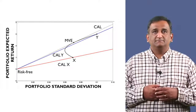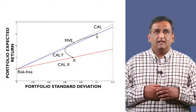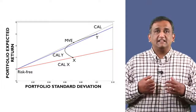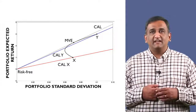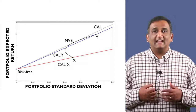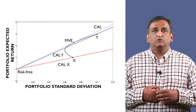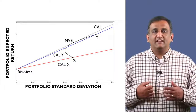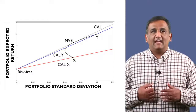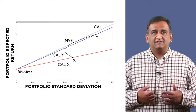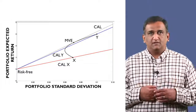Can we do even better than this? Yes — make the capital allocation line from the risk-free asset steeper until it is tangential to the mean variance frontier between X and Y. This is the gray line from the risk-free asset through the point MVE, which lies on the mean variance frontier. MVE stands for the mean variance efficient portfolio.